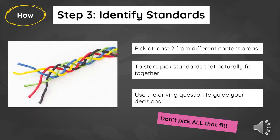The next step is to identify your standards. Because this is interdisciplinary, you want to pick from at least two different content areas. Start with something that fits naturally, like ELA and social studies, or science and math. Use your driving question to guide your decisions, and don't pick all the standards that fit — you'll cover many different standards over time, but you really want to focus on two or three big ones. Those are the ones you'll focus on for feedback and assessment. If you include everything that fits, it gets really big and hard to track, so just pick two or three big ones.